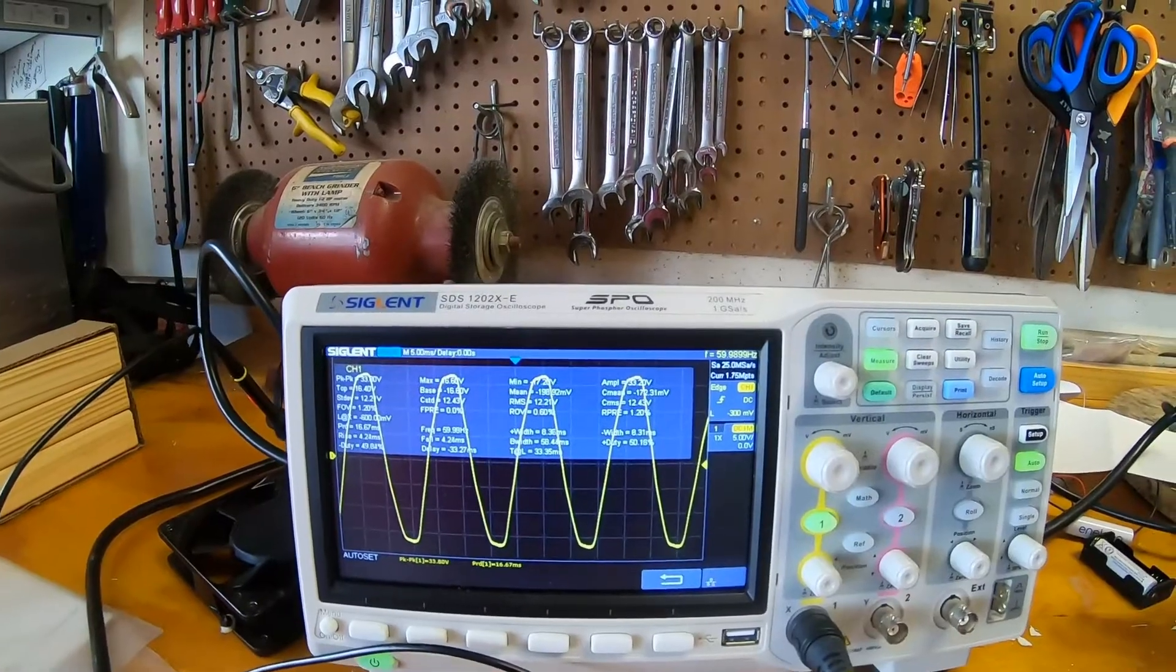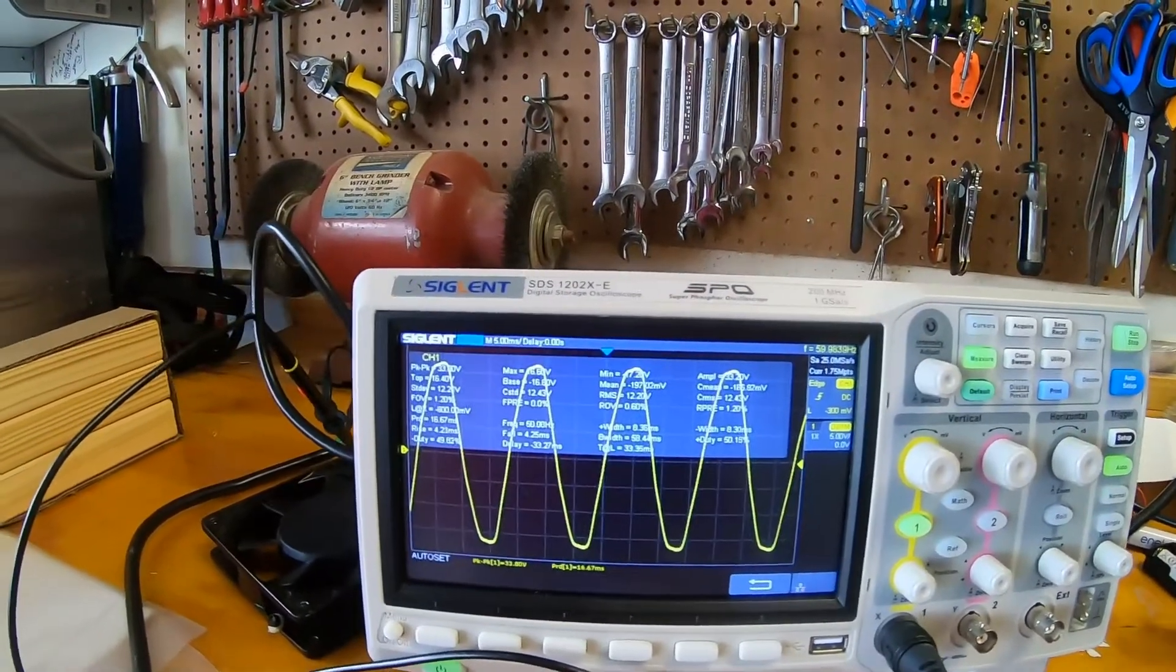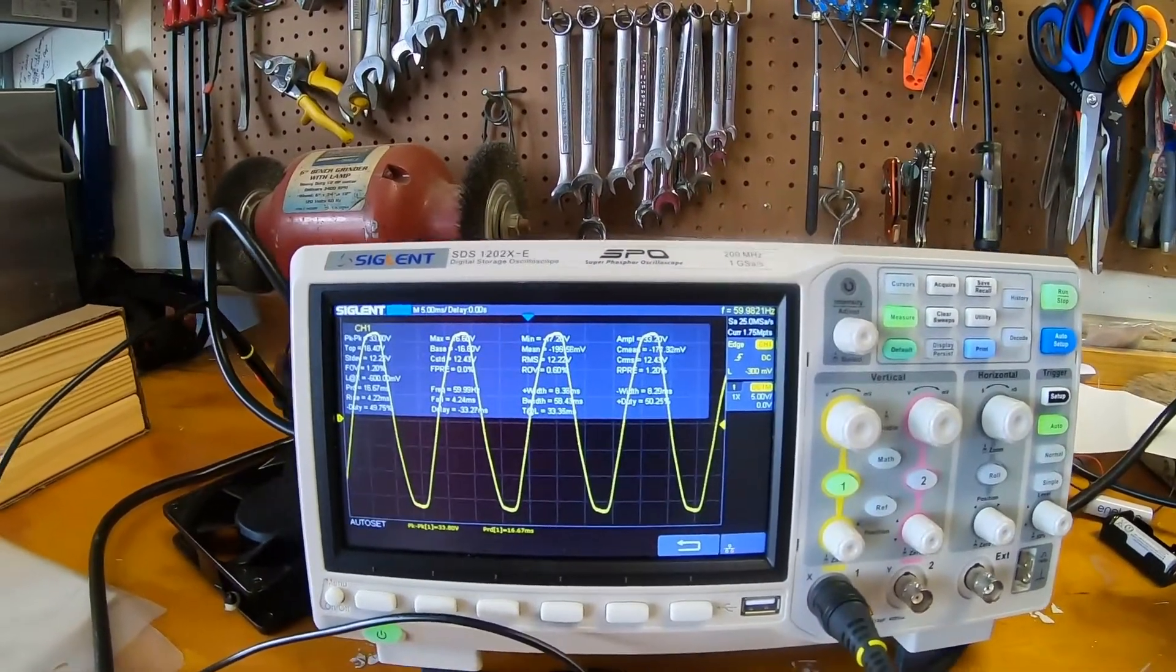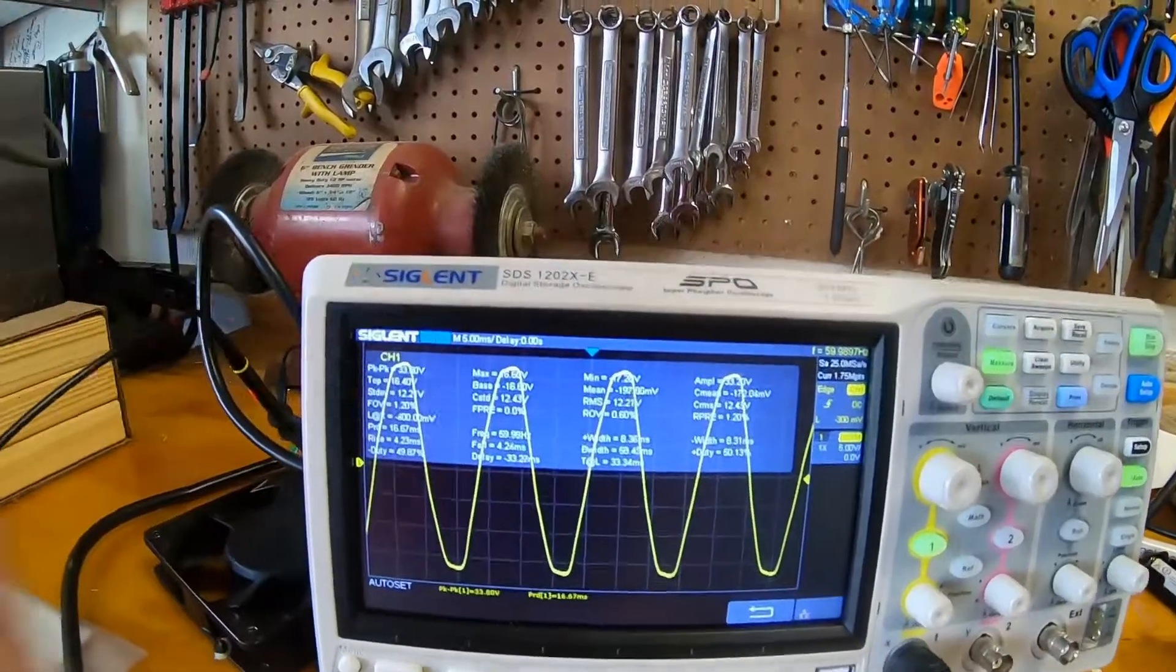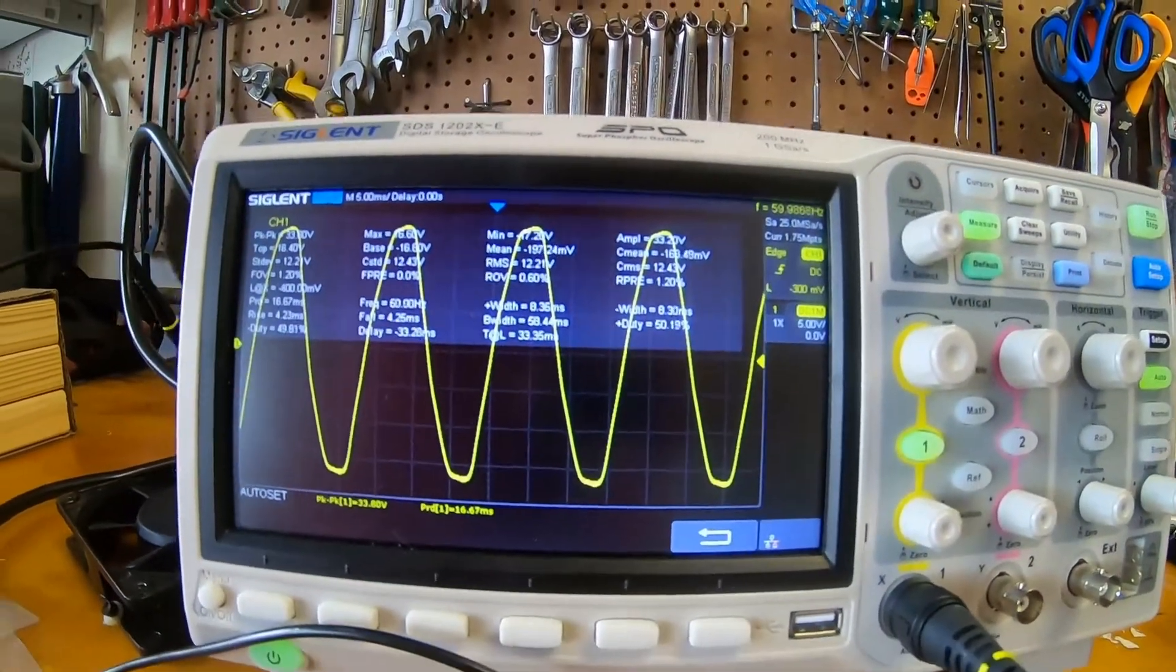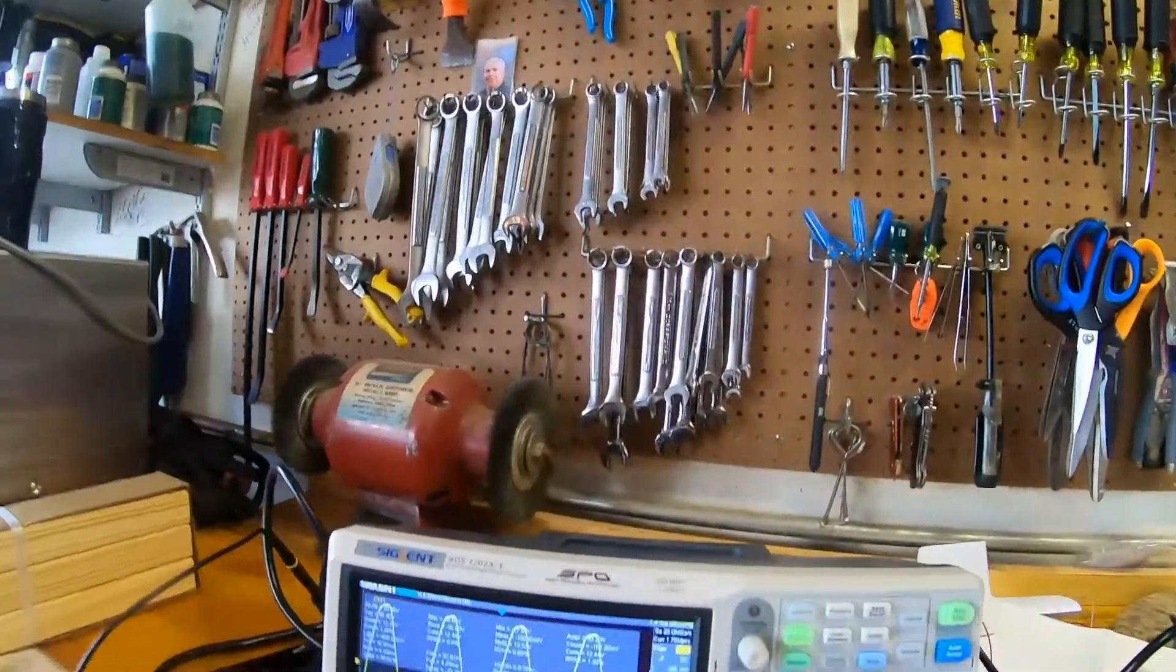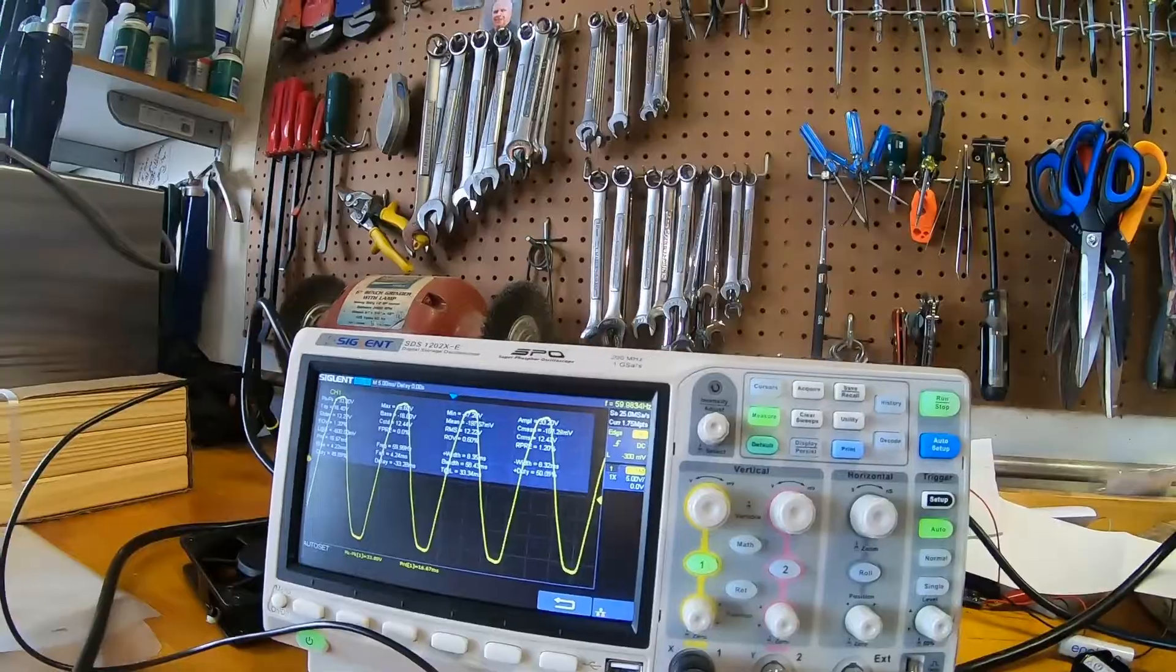Okay, so there's our waveform on utility power. About what we would expect to see. This signal has been attenuated 10x so don't pay too much attention to the numerics but the waveform itself is what you want to focus on. And we're getting almost exactly 60 hertz again which is what we'd expect in the United States anyway.